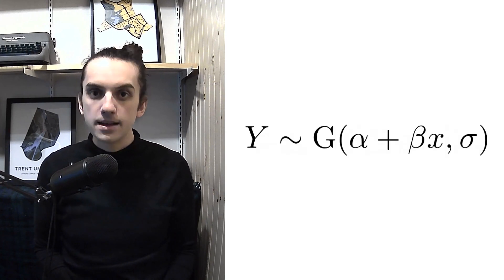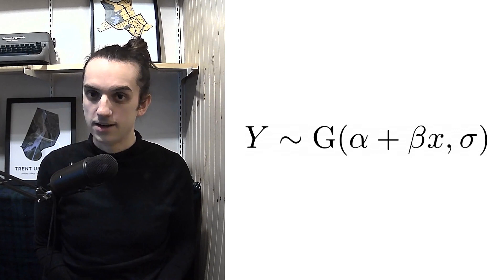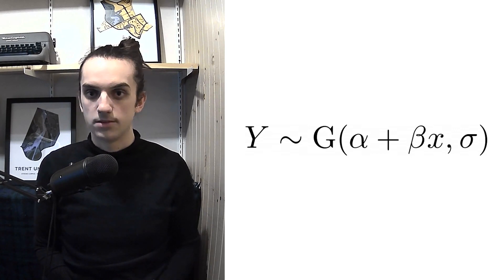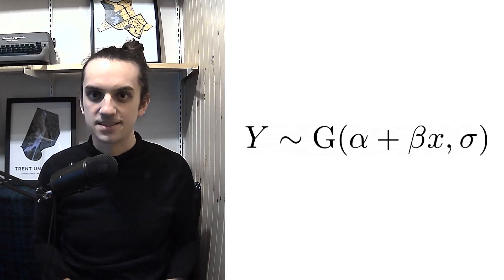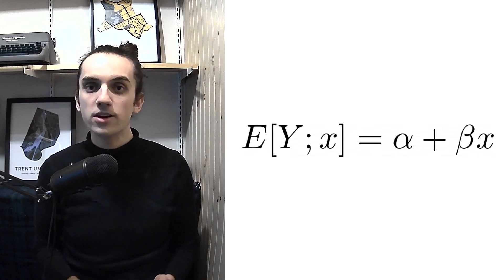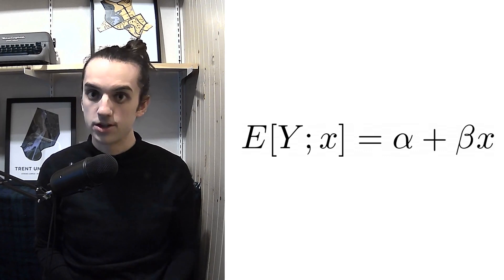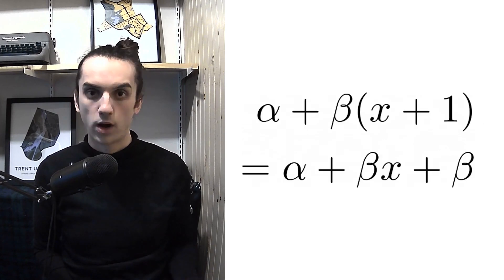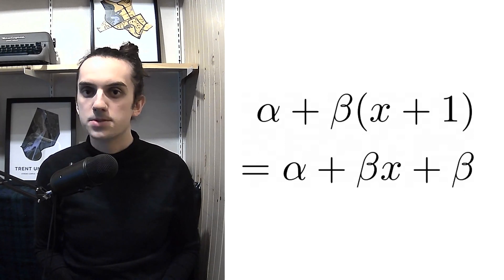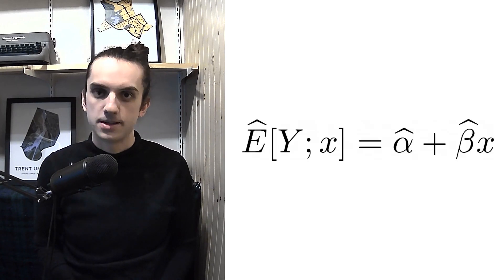Linear regression is one possible mechanism for doing this. Instead of assuming that y is Gaussian with a constant mean and variance, we instead assume that, given the observations for the independent factor, our outcome is Gaussian with mean given by alpha plus beta times the independent factor x. We still typically assume constant variance. What we are saying with this assumption, practically, is that there is a linear relationship between our dependent and independent variable on average. That is, if we experience an increase of 1 for our independent factor, we would expect to observe an increase of beta for our dependent factor. With this assumption, we can use maximum likelihood estimation to form estimates of the parameters alpha and beta and produce an estimated regression line.